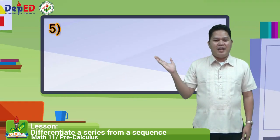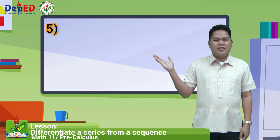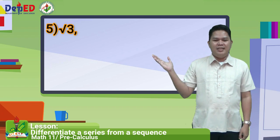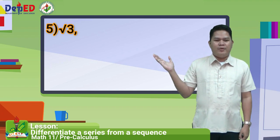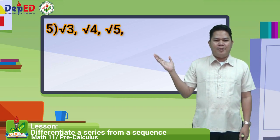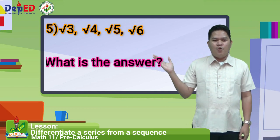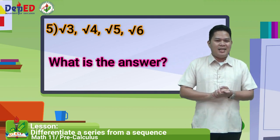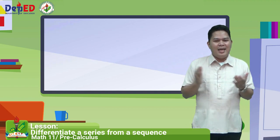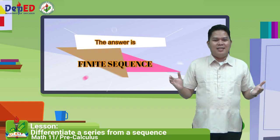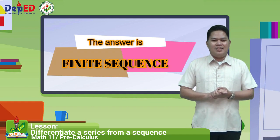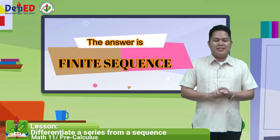Number five: square root of three, square root of four, square root of five, and square root of six. The answer is finite sequence.